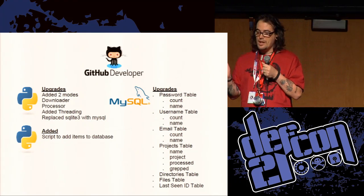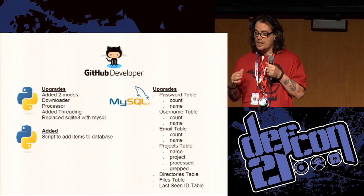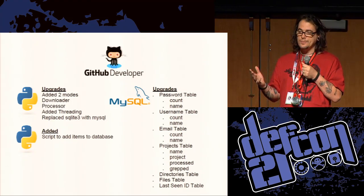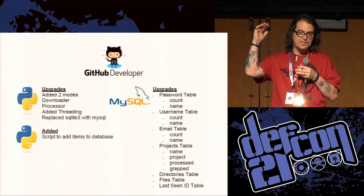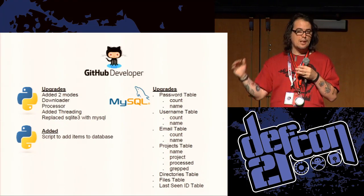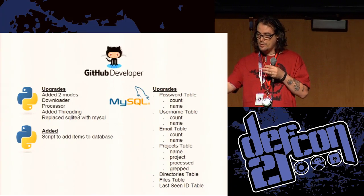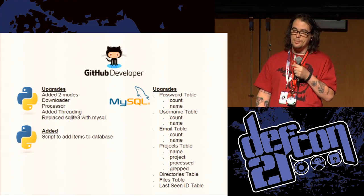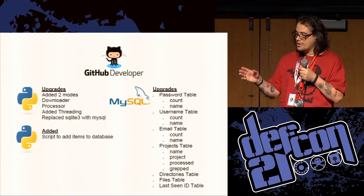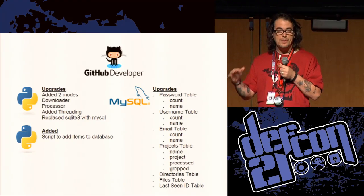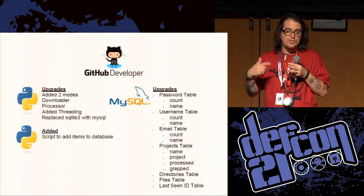For the database, SQLite sucks really badly when you're trying to store a lot of data, so I switched to MySQL. I've had questions about why I didn't use Postgres — well, I know MySQL and I'm lazy, didn't want to learn something new. So I've got two main scripts: a threaded Python script that downloads all the data and has a mode to process it, and another script that takes a long list of usernames, passwords, and email addresses, and dumps all that data into a given table. I've created a table to keep track of more project information, and usernames, passwords, and everything now has its own table. I'm keeping track of the last seen ID so I don't have to start over.